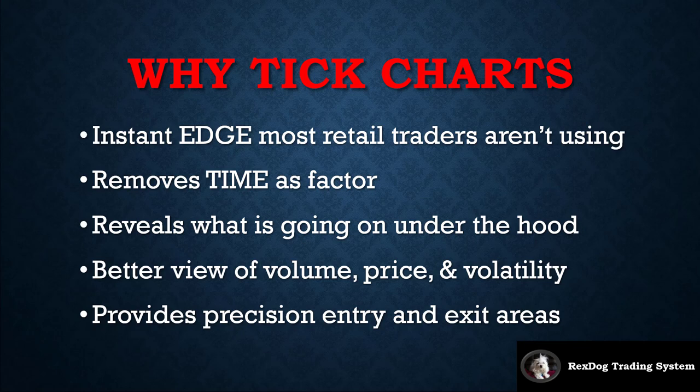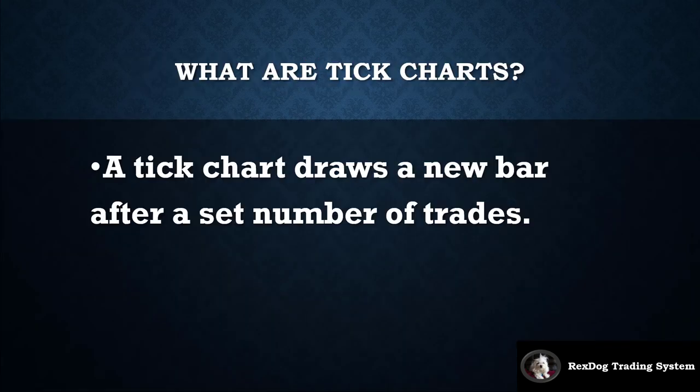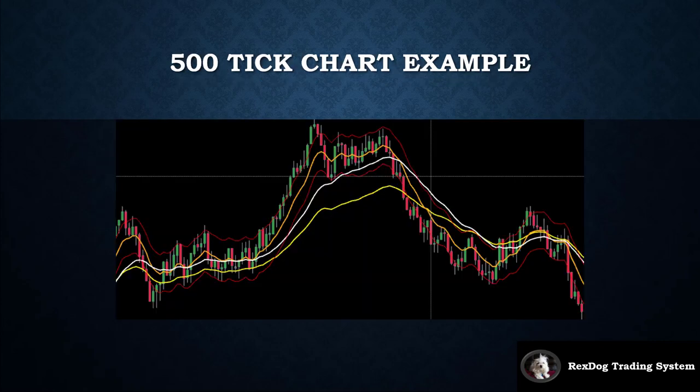Now that we've covered the top reasons why tick charts are a great addition to your trade system, let's talk about the what. What are tick charts? Quite simply, a tick chart draws a new bar after a set number of trades. A time chart represents a five-minute or one-hour window based on time. A tick chart, on the other hand, draws a new bar after a certain number of trades. For example, a 500 tick chart has 500 trades in each candle. If you get a red candle, the sellers overcame the buyers within that 500-trade range.